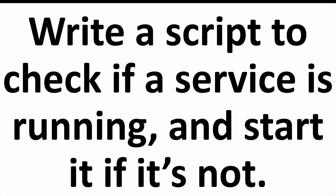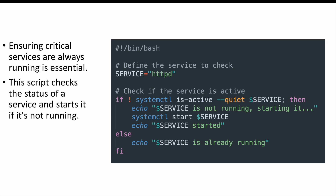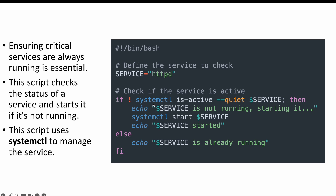The next question is: write a script to check if a service is running and start it if it's not. Ensuring that your critical services are running is very essential — whether it's Tomcat, Apache, or any other application. We write a script that checks the status of the service and starts it if it's not running. In this case, we look for the HTTP service, declare it as a variable, run a command, and if the service is not active, we print that it's not active and start it. If it is running, we print that the service is already running. This script uses systemctl to manage the service. You can also create an array and use a for loop to check multiple services.